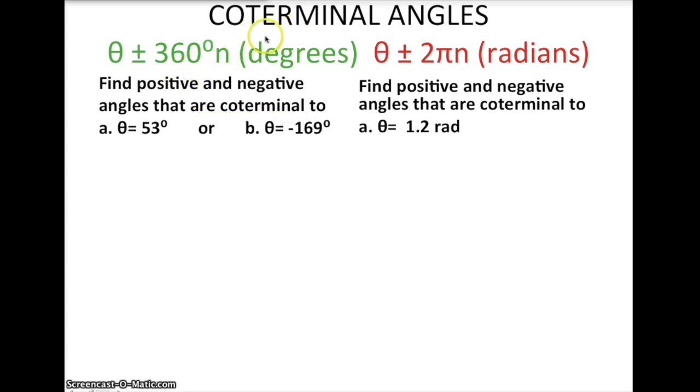The terminal side is the end of the angle. Zero degrees is the initial side. If you're in radians, it's the angle plus or minus 2π. You can do as many rotations as you want, so you might put times 2 here, times 3.